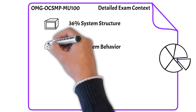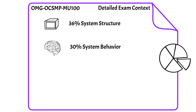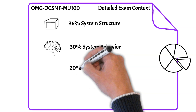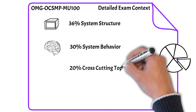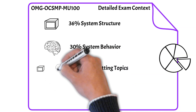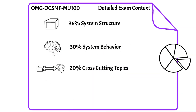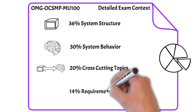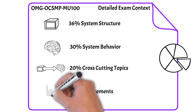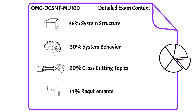36% of the test is system structure, 30% of the test is system behavior, 20% is cross-cutting topics, and 14% is requirements.